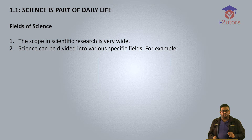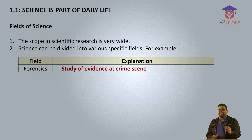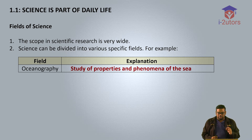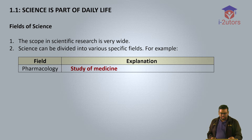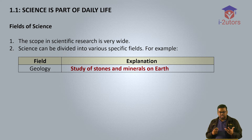Starting with number 1, zoology — the study of animals. Number 2, forensic — the study of evidence in a crime scene, like CSI. Number 3, oceanography — the study of properties and phenomena at the sea. Number 4, astronomy — study of objects in the universe. Number 5, pharmacology — studies of medicine. Number 6, microbiology — study of microorganisms. Number 7, geology — the study of stones and minerals on the earth.